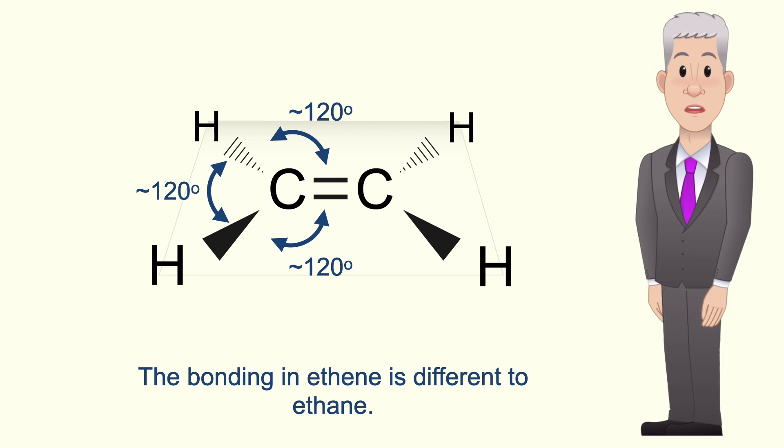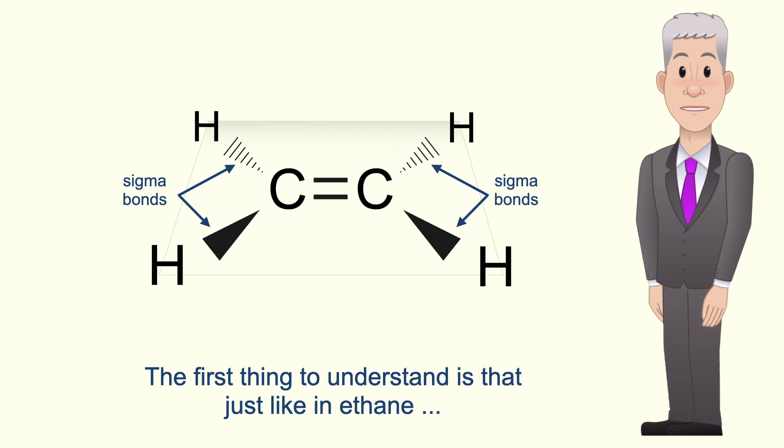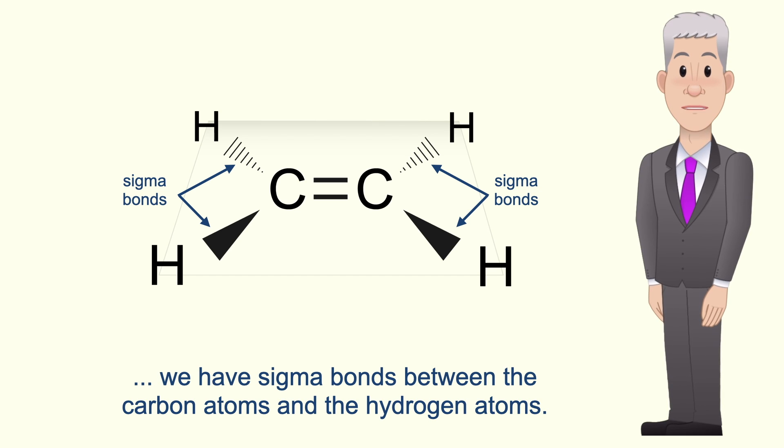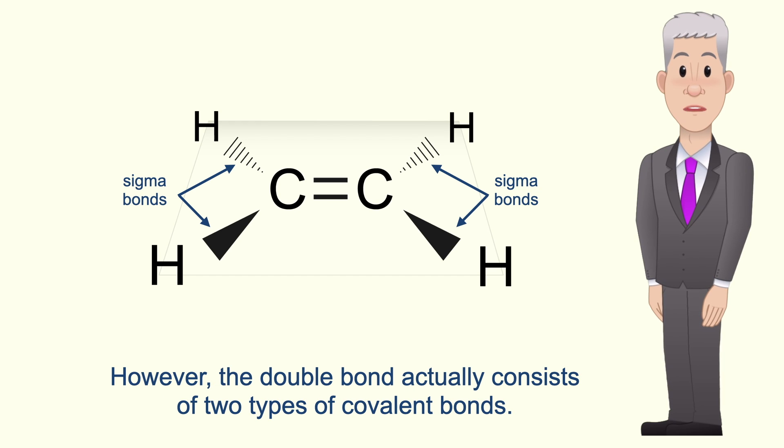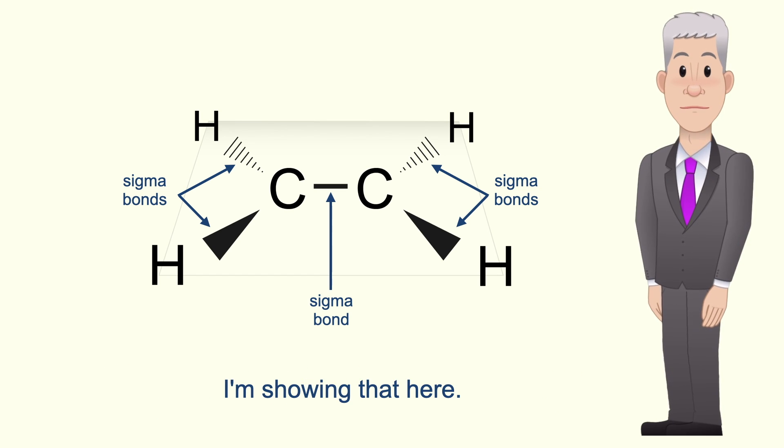Okay now the bonding in ethene is different to ethane and that's due to the double bond. The first thing to understand is that just like in ethane we've got sigma bonds between the carbon atoms and the hydrogen atoms. However the double bond actually consists of two types of covalent bonds. When the double bond forms we make one sigma bond between the carbon atoms and I'm showing that here.